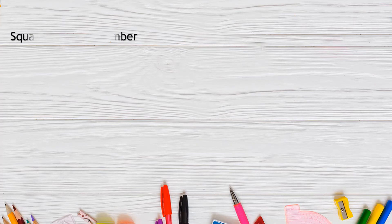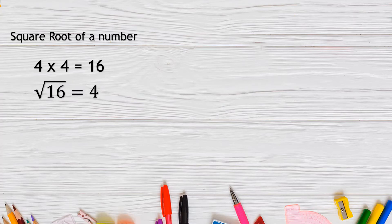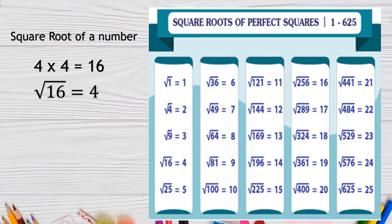Notice that the square root of a number is the value that, when multiplied by itself, gives the number. For example, 4 multiplied by itself equals 16, so the square root of 16 is 4. Here is the complete list of square roots of perfect squares from 1 to 625. You can pause this video to take a look at the list.